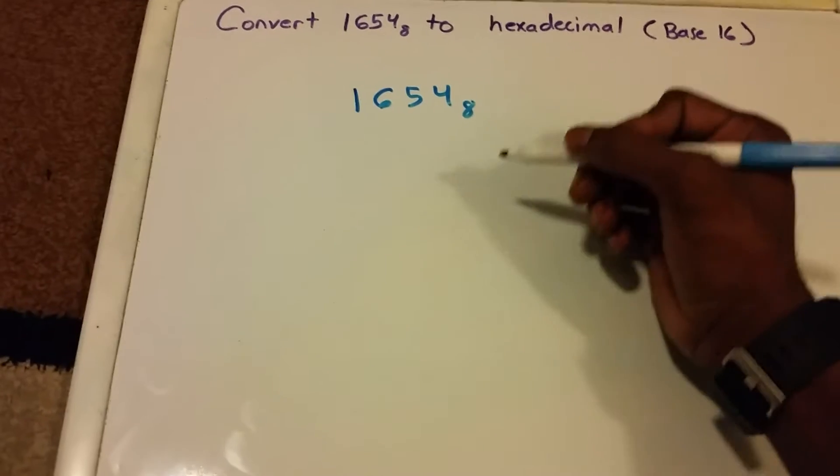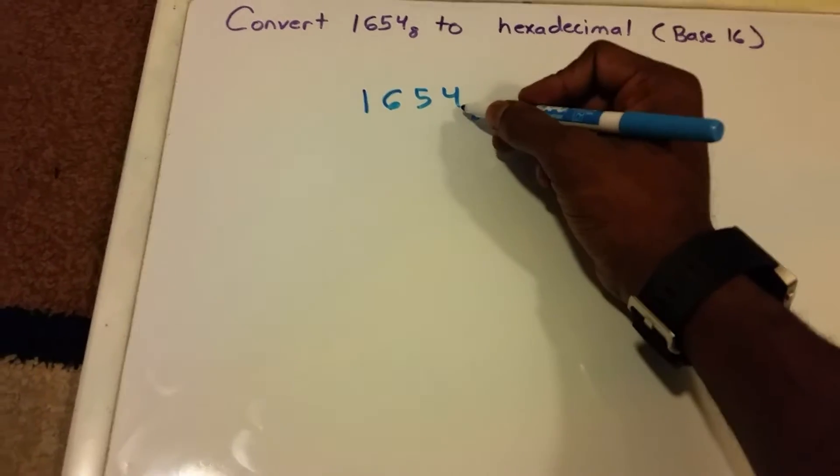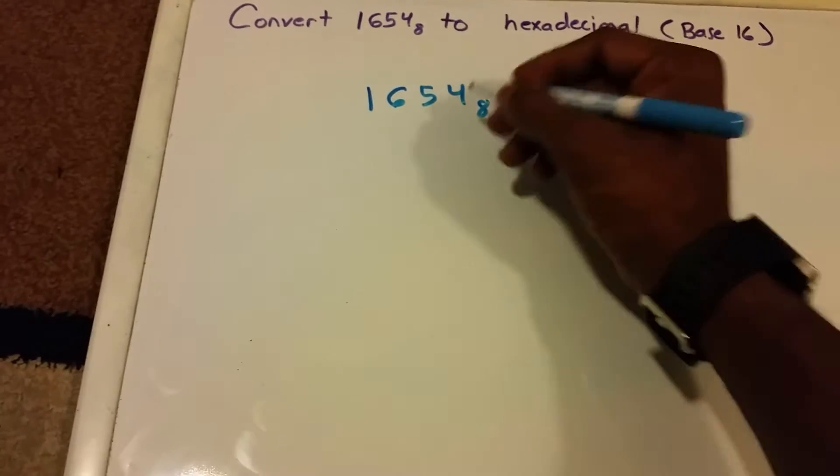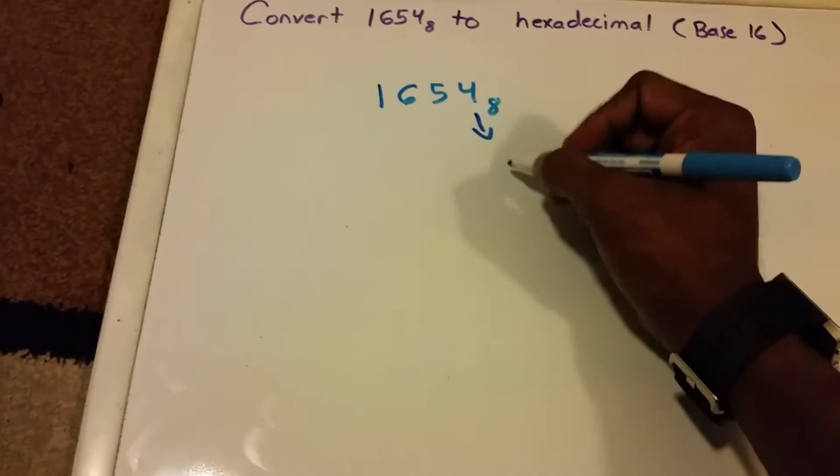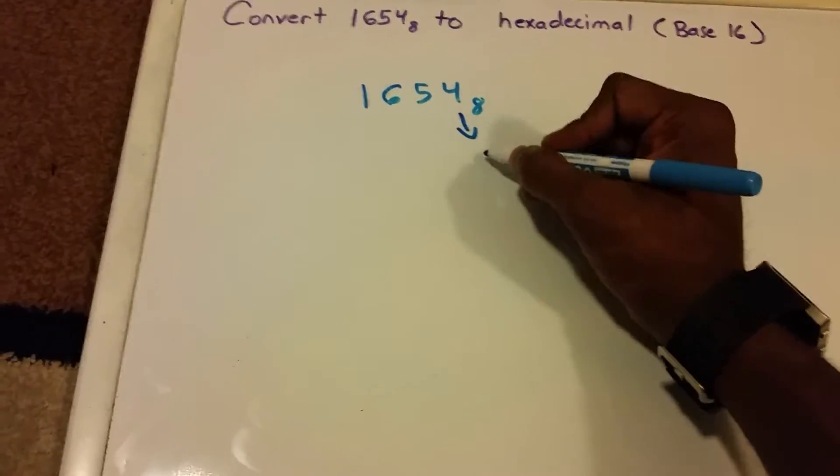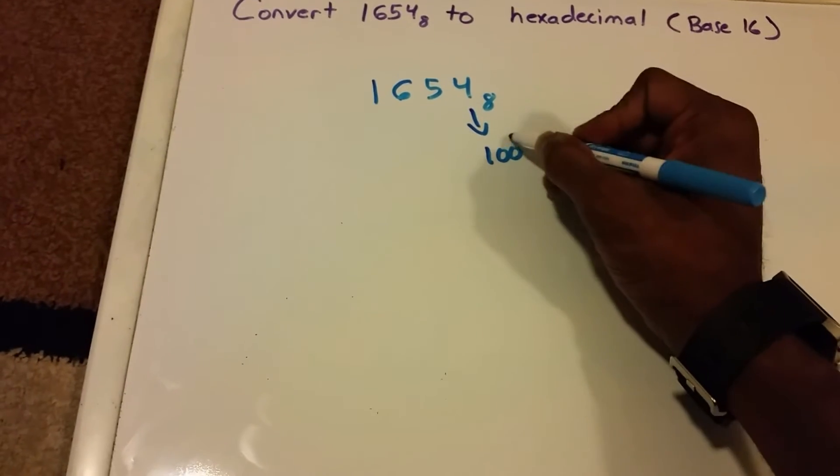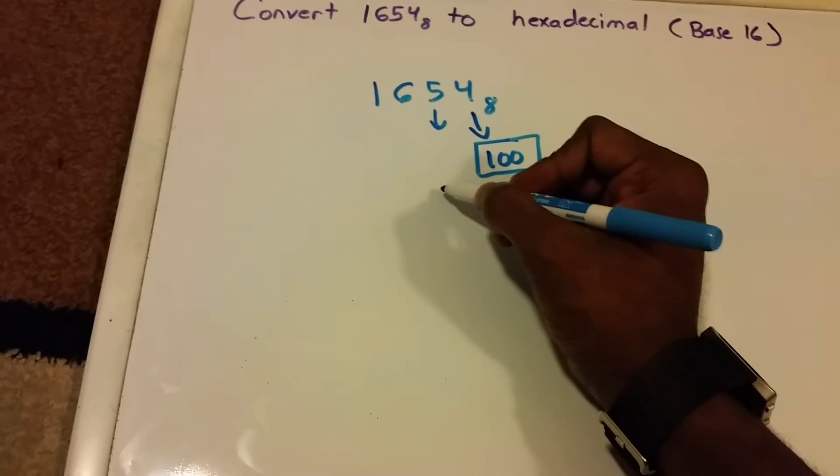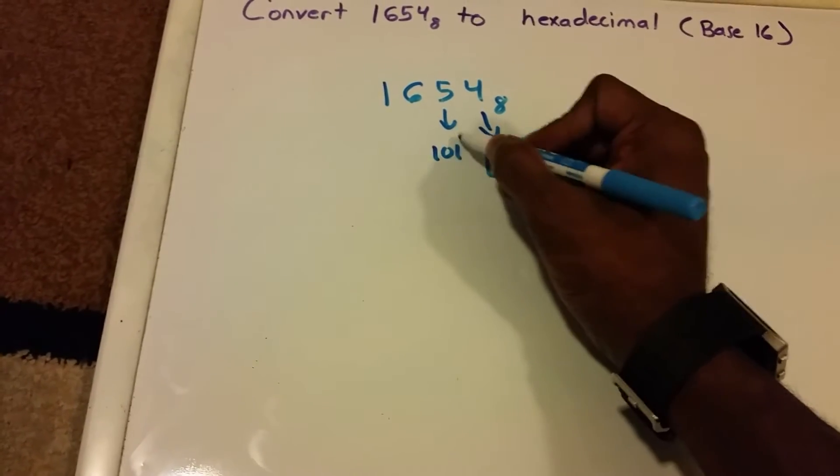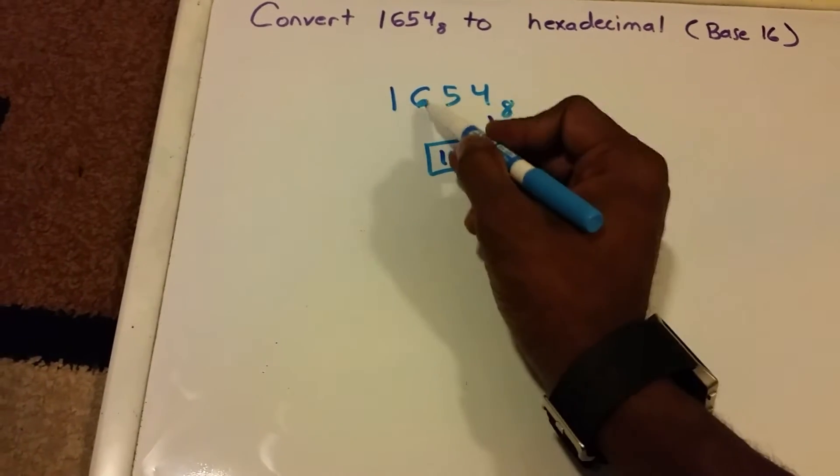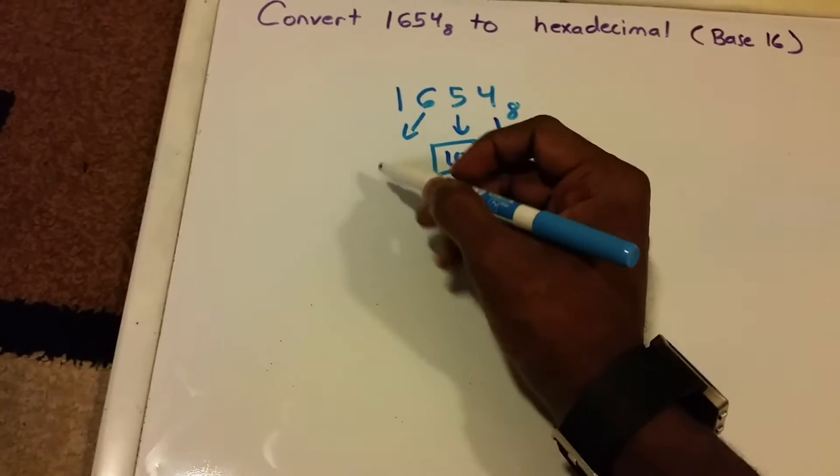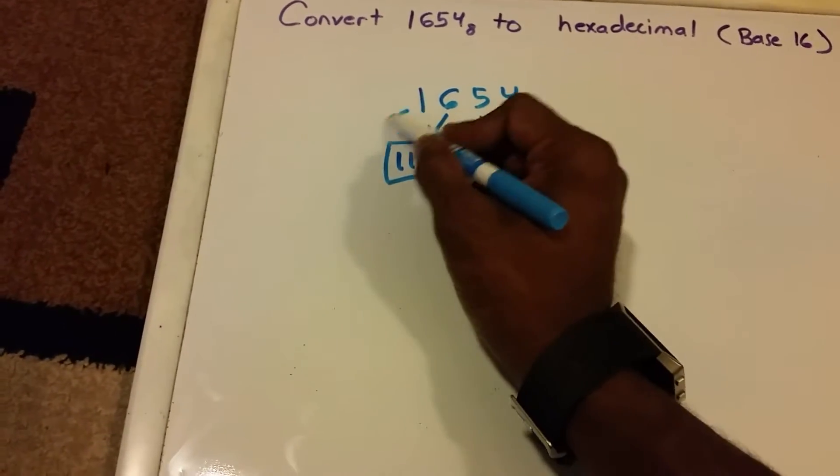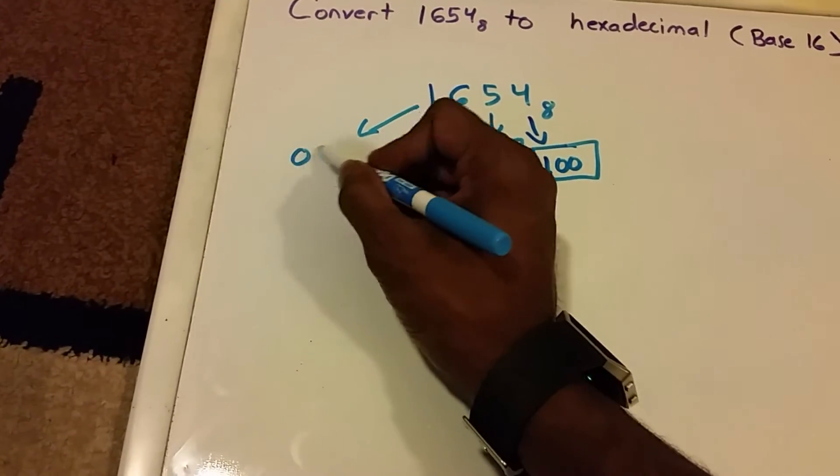Because this is base 8, we're going to group our digits by 3. So 4 here in binary would be 100, and our 5 in binary would be 101, and then our 6 here is going to be 110, and then our 1 is 001.